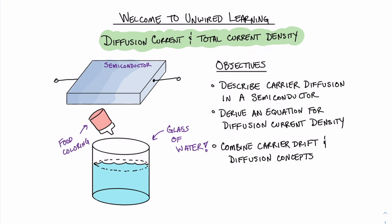Our goals for this video are to describe the concept of carrier diffusion in a semiconductor, derive an equation for diffusion current density, and combine these two concepts of carrier drift and diffusion together to come up with a total current density equation.